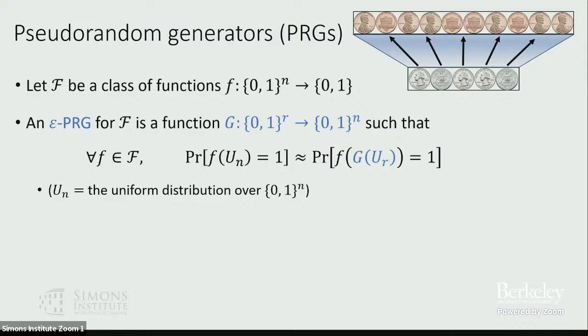What I think is more interesting is to consider a class script F that's a much more restricted model of computation — a weaker model — because that way we can actually prove something. We can actually design pseudorandom generators that work.